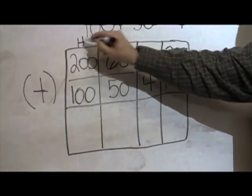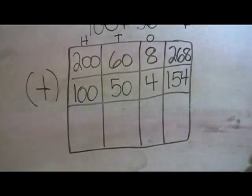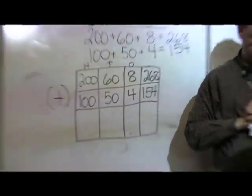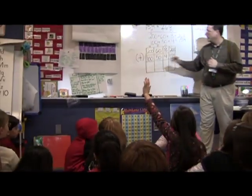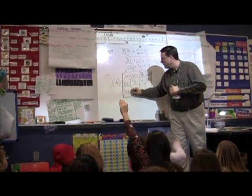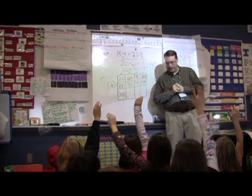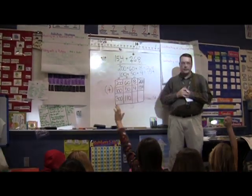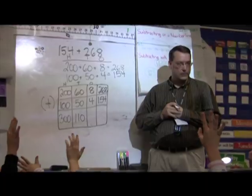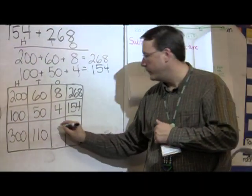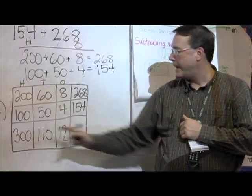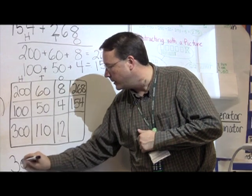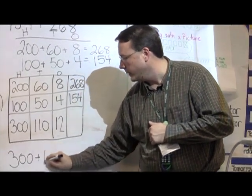So now all we have to do is add our columns up. We add our hundreds, our tens, and our ones. So if I add my hundreds up, what's that going to come out to be? Christopher? 300. If I add my tens up, what's that going to come out to be? Victoria? 110. Good. And if I add my ones up, what's that going to come out to be? Stormy? 12.